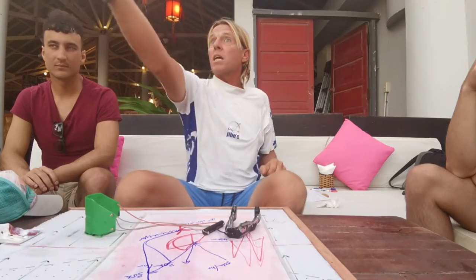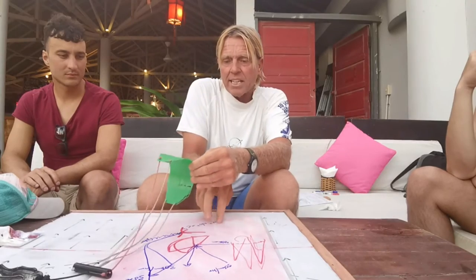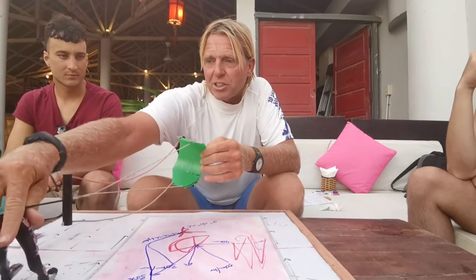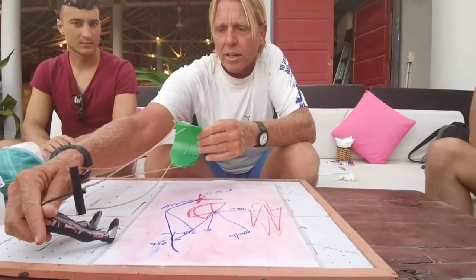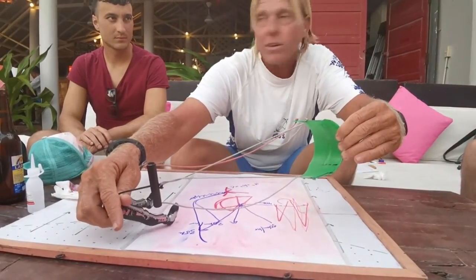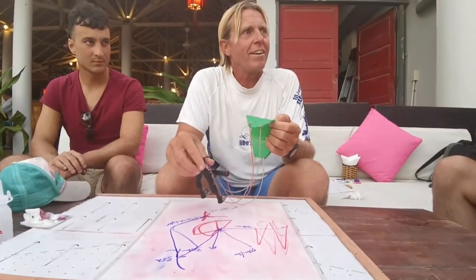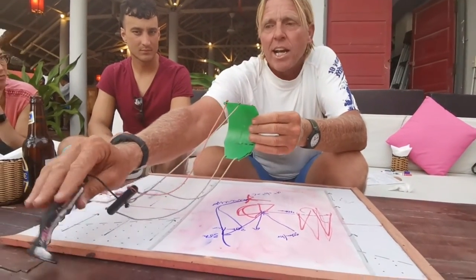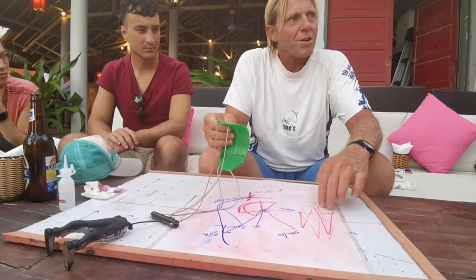Have you ever noticed when people come in to catch the kite — someone's standing there to catch it, and to stop the rider edges really hard, and at that last minute the kite shoots forward? That's the apparent wind right there. So if someone's coming in and you want to catch their kite and they haven't stopped already, stand a little bit further upwind, because when they're going fast their wind window is now shifted forward.